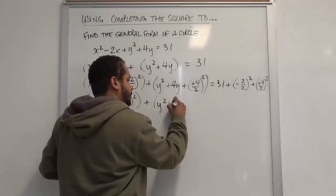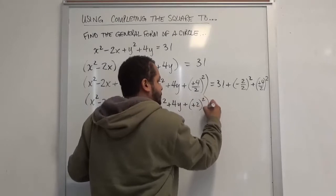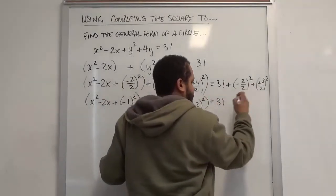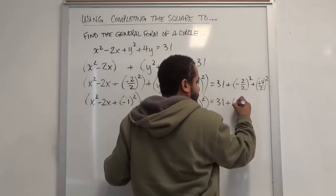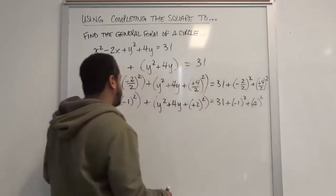Here we have y squared plus 4y's plus positive 2 being squared. On this side here, we're just going to evaluate these sides. We have negative 1 being squared plus a 2 being squared. That's a positive 2.